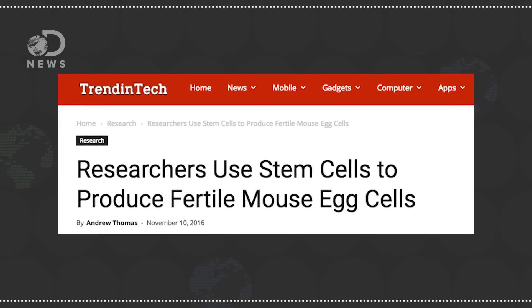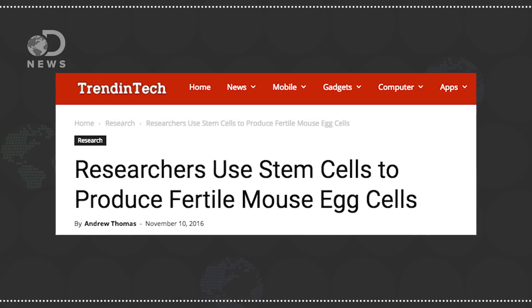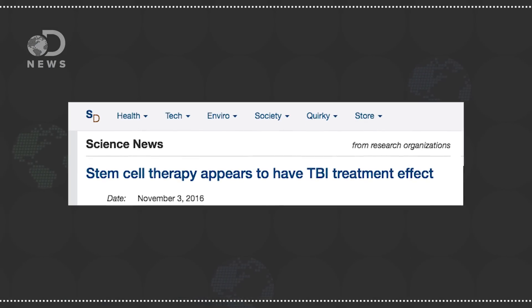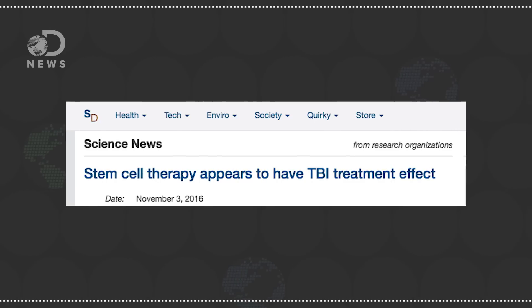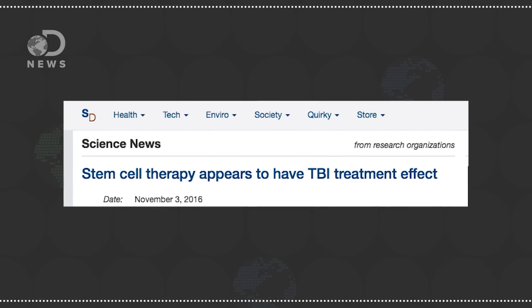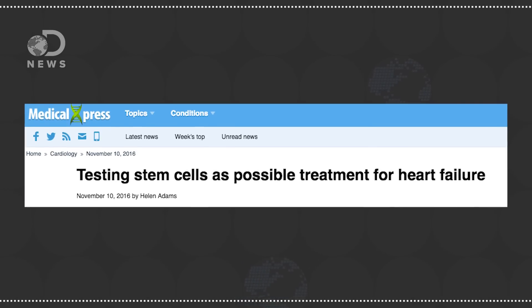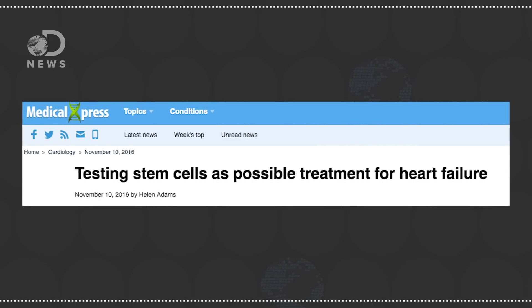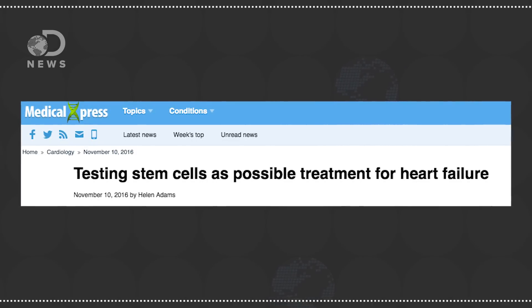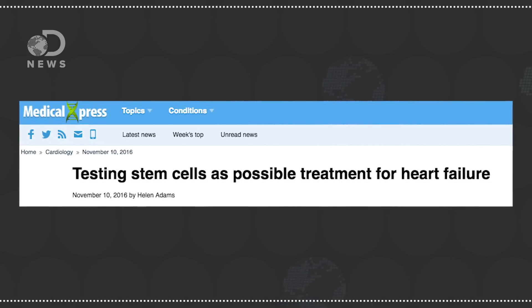Scientists successfully created mouse eggs from stem cells that produced healthy young pups when fertilized, stem cell therapies on people with traumatic brain injuries appear to reduce the body's neuroinflammatory response, saving brain tissue, and cardiologists are testing stem cells as a treatment for a type of heart failure that kills half its victims within five years and previously had no treatments at all.